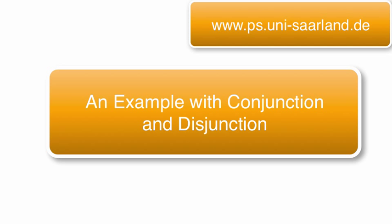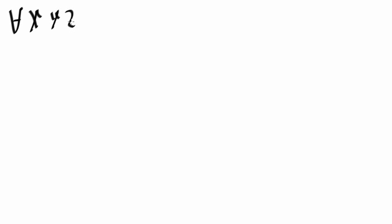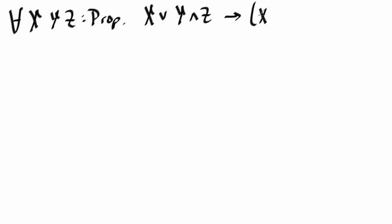In this video we'll prove a certain property of conjunction and disjunction. The property is a kind of distributive law. So let's give the proposition: for all x, y, and z in prop, x or (y and z) implies (x or y) and (x or z).